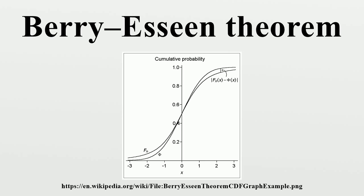In the case of independent samples, the convergence rate is n^(-1/2), where n is the sample size, and the constant is estimated in terms of the third absolute normalized moments.